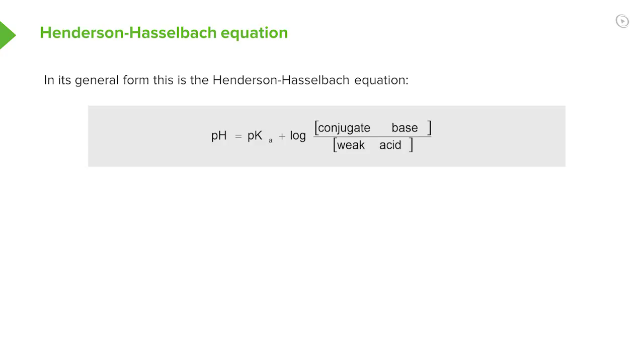In its general form, the Henderson-Hasselbalch equation is given thus. Where we have a concentration of a conjugate base, in this case our acetate, over our concentration of weak acid, in this case our acetic acid, we add the log of that relationship or ratio to our pKa to give us the pH. Log to the negative base 10 of hydrogen or H+.